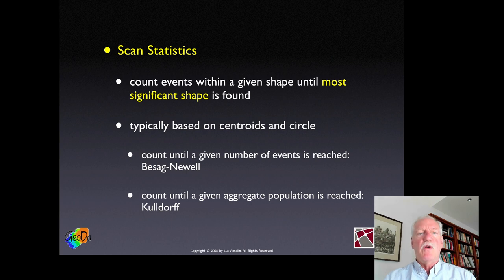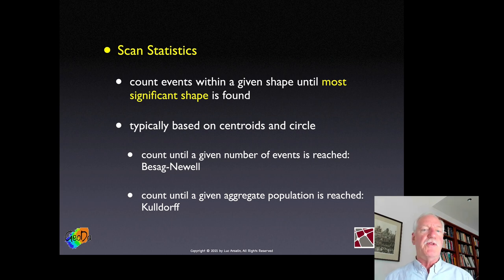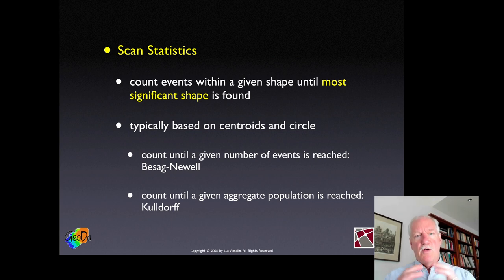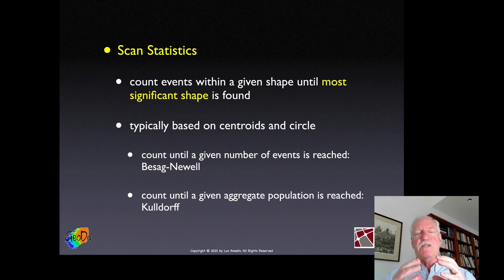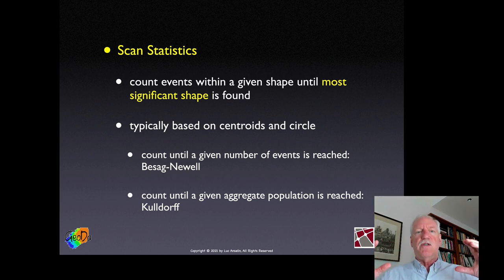The Bissack-Newell approach increases the circle until a critical number of events is reached, while the Kulldorff approach increases the circle until a critical population size is reached. Both go through every spatial unit, place the center at the centroid, and increase the radius from the first nearest neighbor outward, until reaching the stopping point, at which a statistical test is carried out.